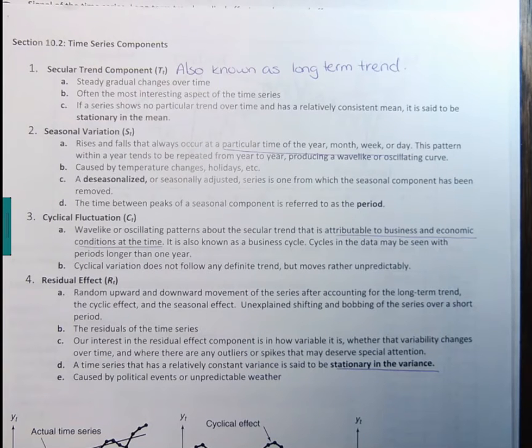We could look at cyclical functions. These are wave-like or oscillating patterns about the secular trend that is attributable to business and economic conditions at the time. It's also known as the business cycle and cycles in the data may be seen with periods longer than one year. So these aren't restricted to be within a single year that repeats itself. Cyclical variations do not follow any definite trend but move rather unpredictably.